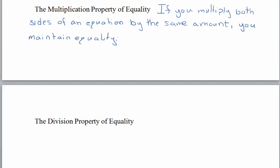If you were looking this up in a textbook, it would give you some symbols. If you start off with two things being equal — a equals b — and you wanted to multiply both sides by the same amount c, then a times c is equal to b times c. You get a different amount, but both amounts are still equal. We have exactly the same thing happening with the division property of equality.